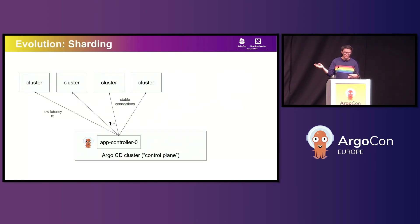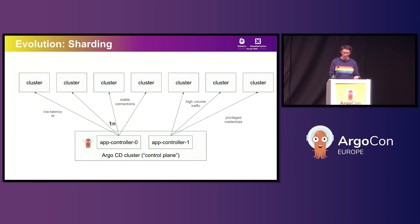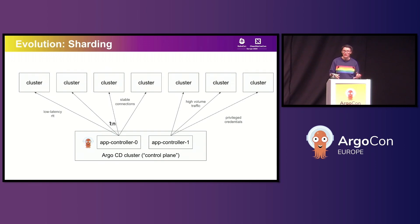In order to help with scaling out to more than a handful of clusters, the project came up with a mechanism called cluster sharding. Sharding basically allows you to scale the application controller horizontally, and each replica will have a group or shard of clusters. This approach definitely helped with scalability but it didn't address any of the original challenges around how remote clusters were accessed. You still needed stable and low-latency connections, still had to maintain those highly privileged credentials, and still saw all the same amount of traffic as before.